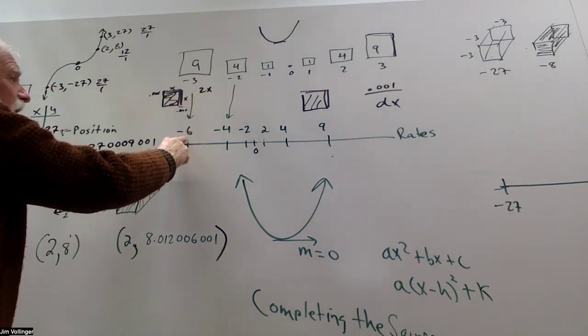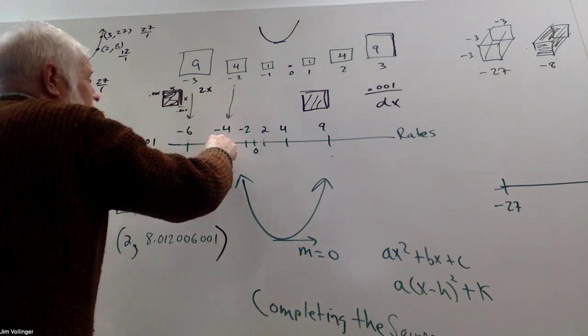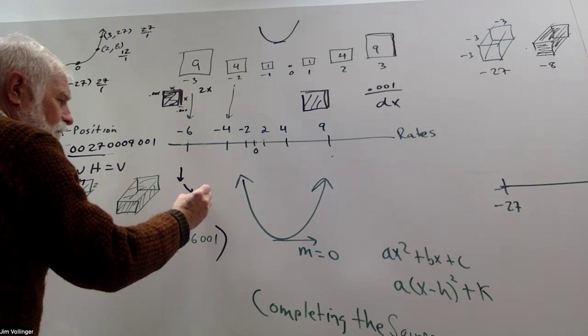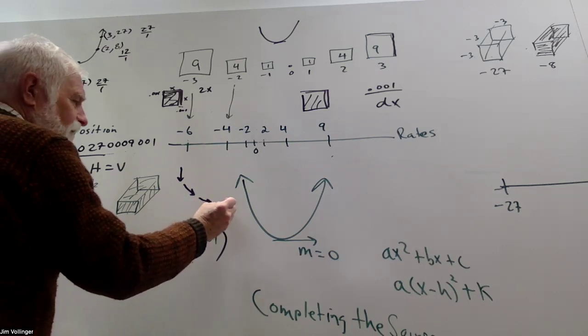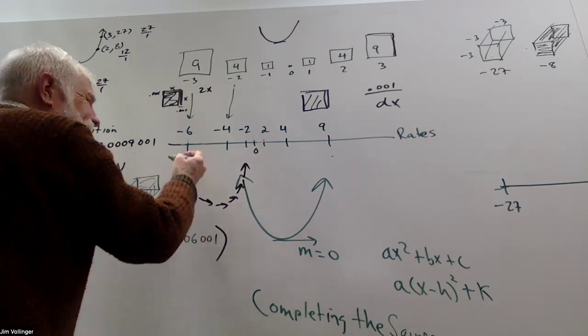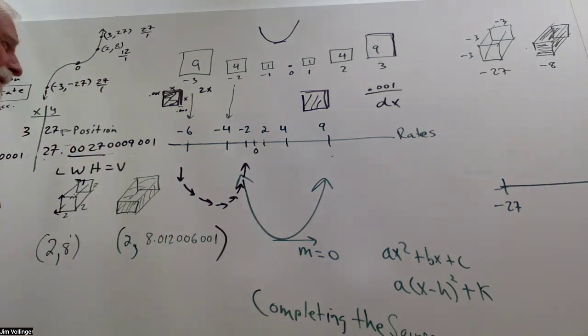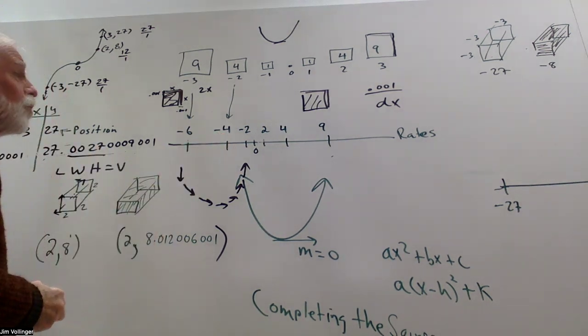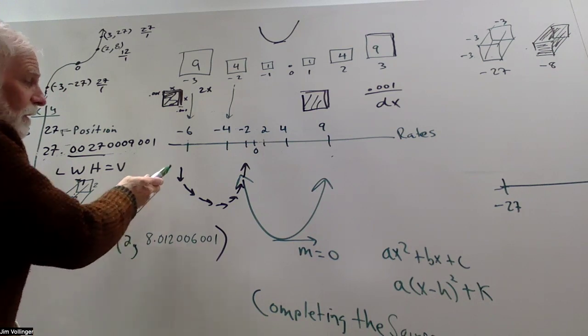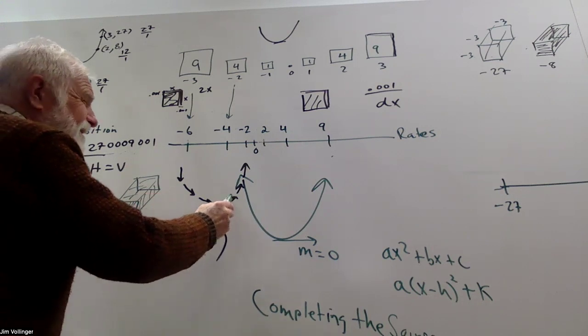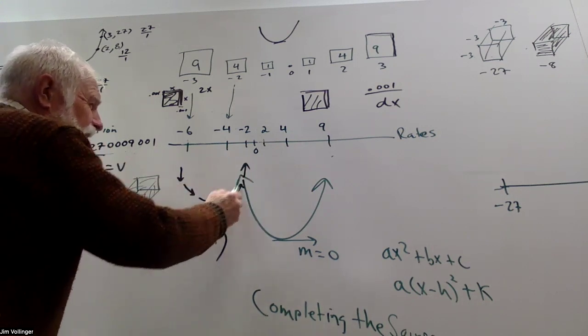If we double that x value, we get negative 6, negative 4. So, that means I'm going down at 6 to 1, down at 4 to 1, down at 2 to 1. I'm flat. I'm going up at 2 to 1, going up at 4 to 1. I think you can begin to see the trajectory. And that's what we call a concave up shape. Because the next rate is always 2 more than the previous one. We've got some acceleration here.